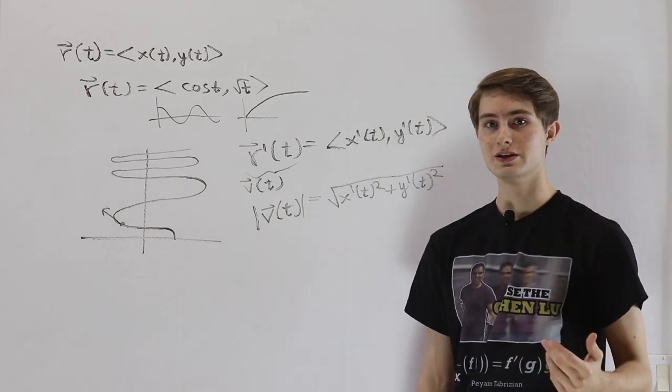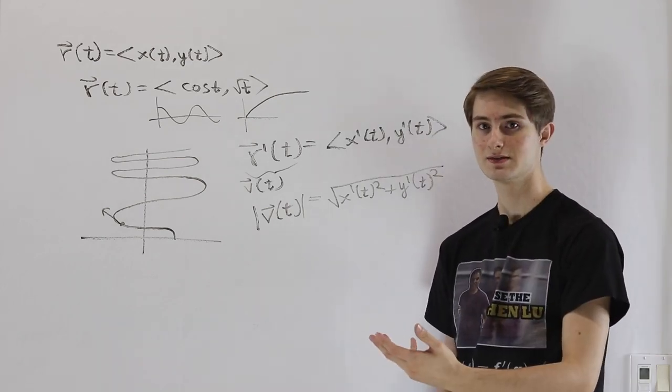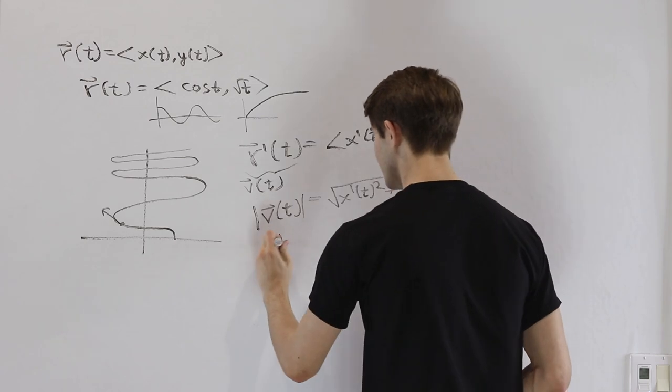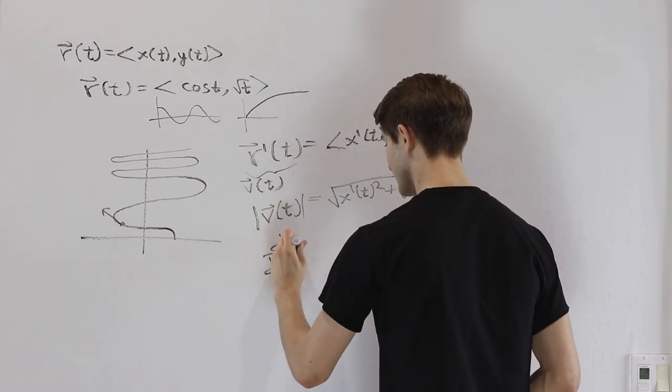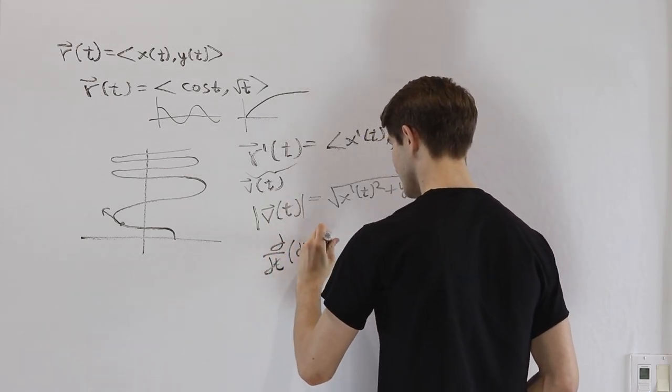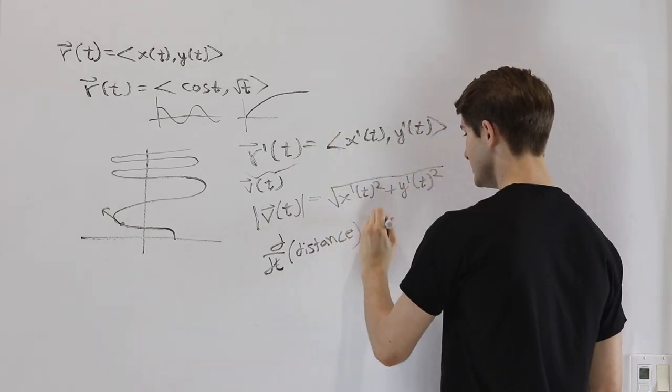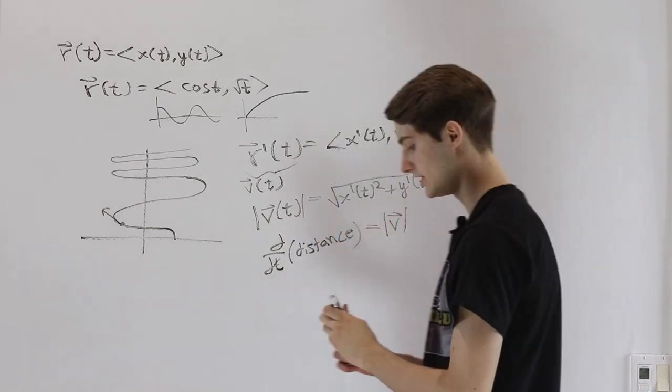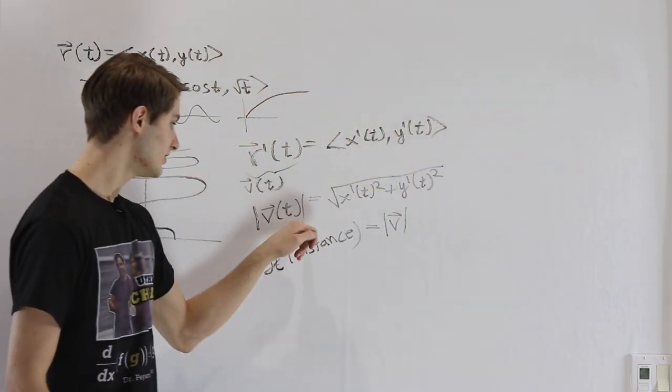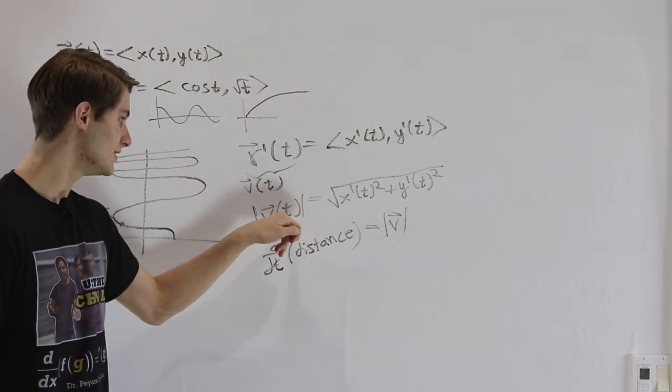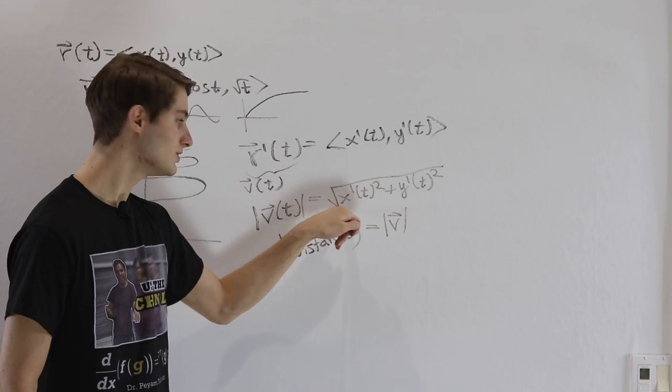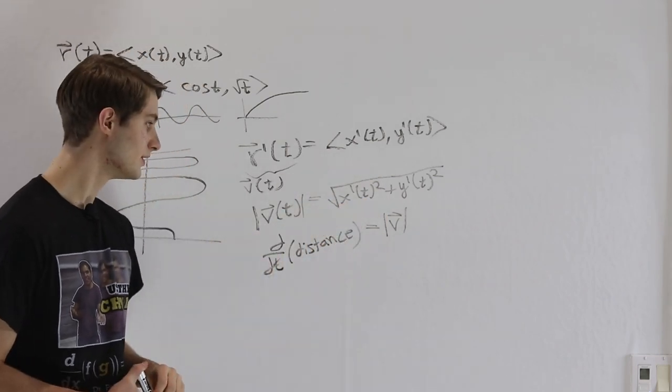What is the derivative of distance? Well, the derivative with respect to time of distance, that's going to be speed. And speed is the magnitude of velocity. That's what we found earlier. The magnitude of the velocity here, that's our speed and it's equal to this square root equation.